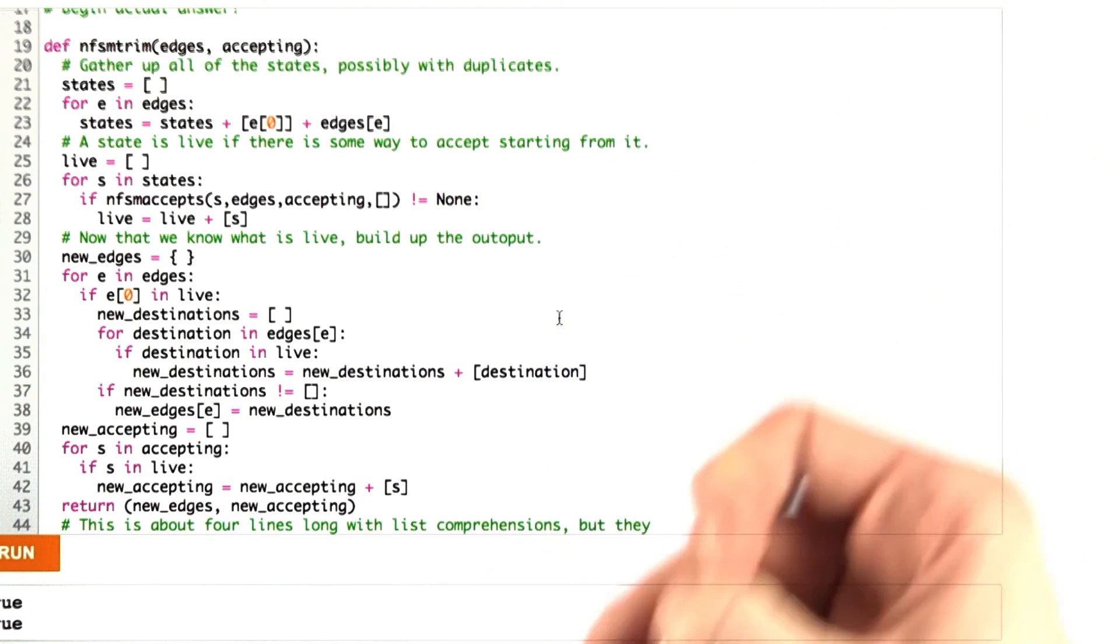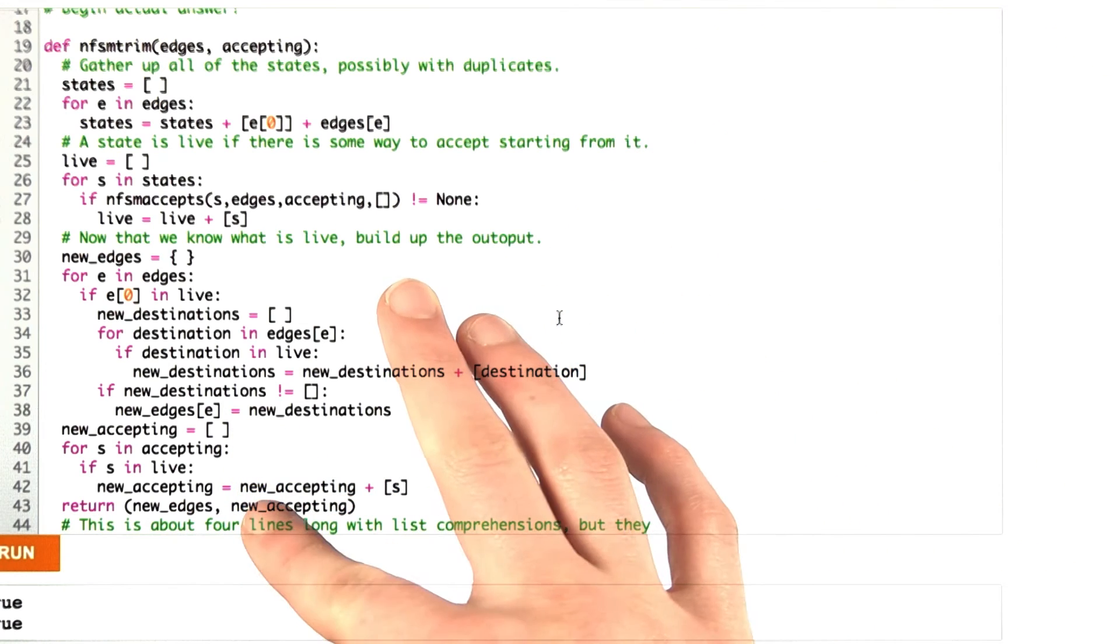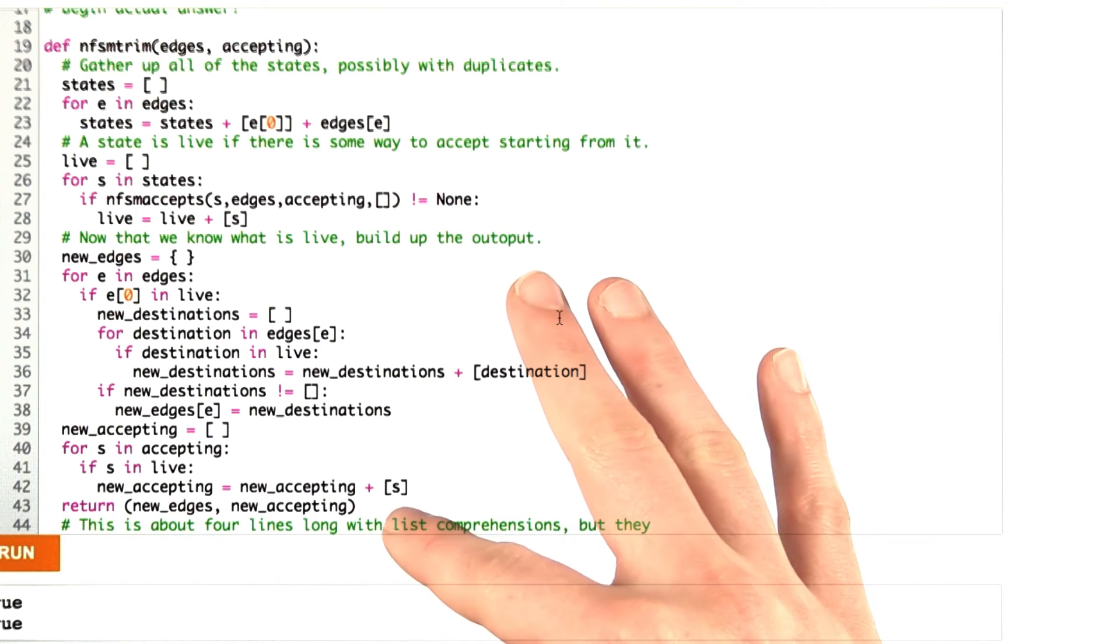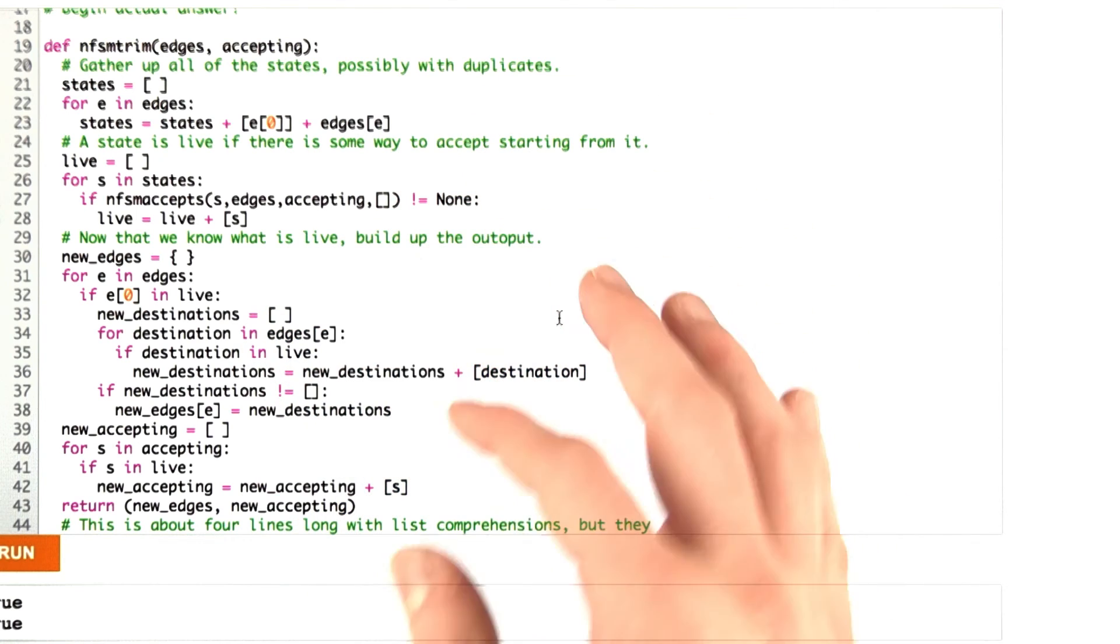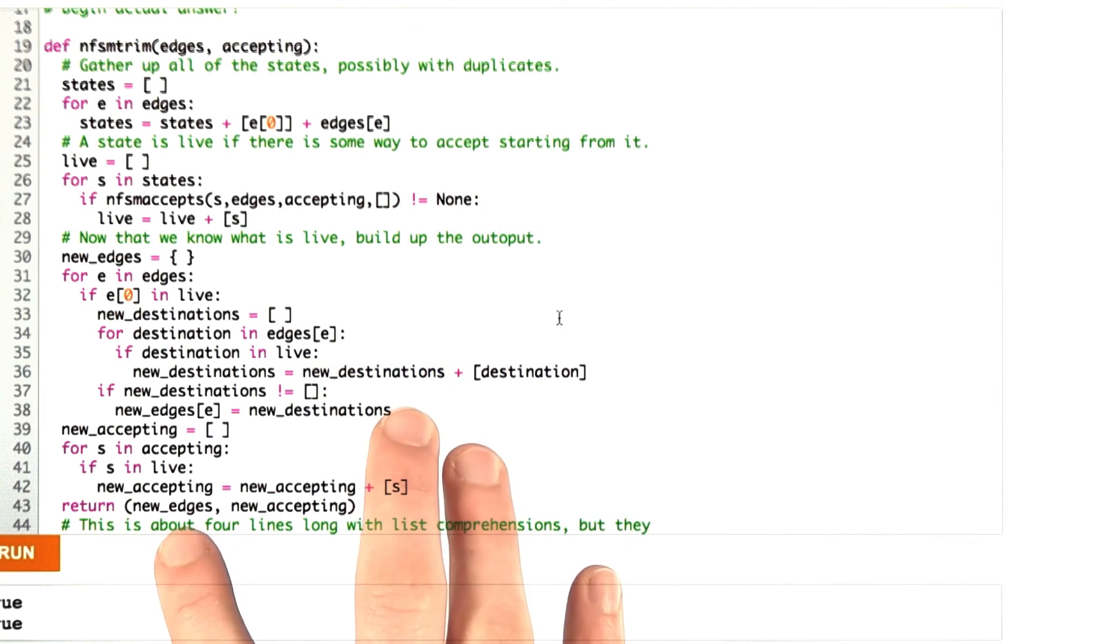We just kind of always assume that if the edge doesn't exist, then we're going to fail. And lastly, I want to update my accepting states to only those that are live. I'm going to return the tuple of the new edges and the new accepting states. And that's it.